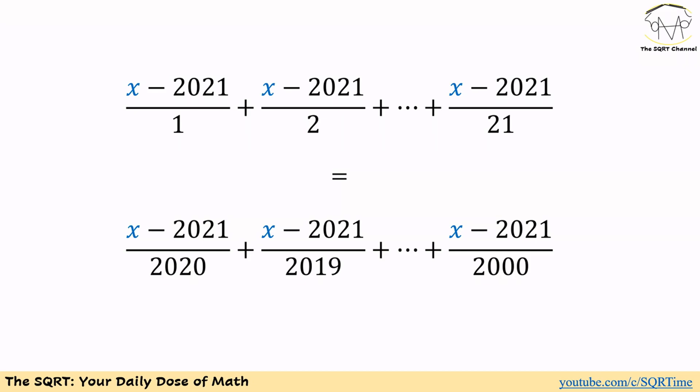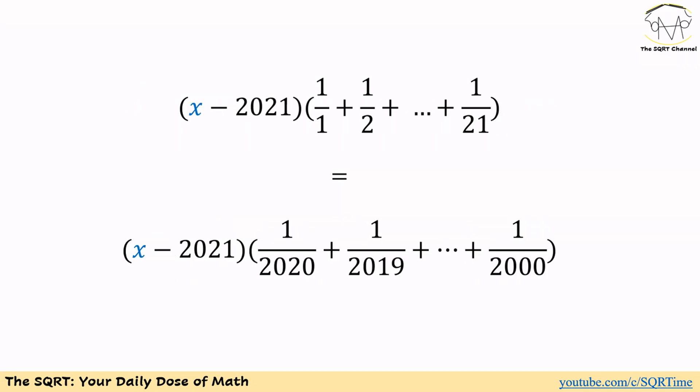From here everything is going to be very straightforward. We will have x minus 2021 as the numerator of each term for both left-hand side and right-hand side. Then we can factor out this x minus 2021 and simplify it further. If we factor out x minus 2021 on the left-hand side, we will have 1 over 1 plus 1 over 2 up to 1 over 21.